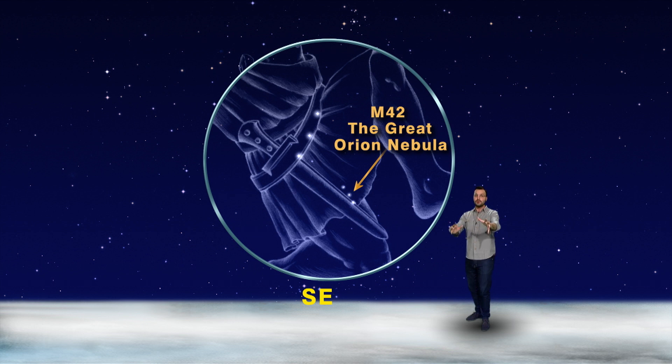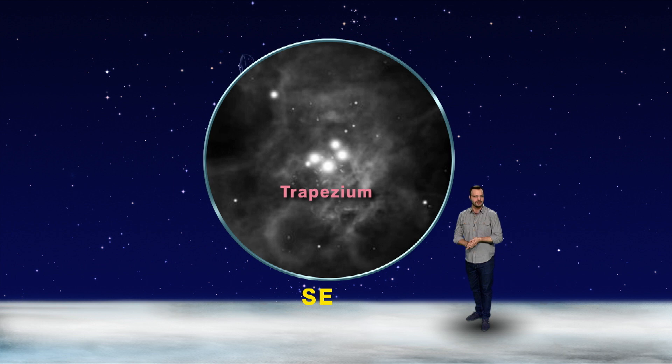Imagine those stars flaming into existence there right now. You can find four of them called the Trapezium with a really small telescope.